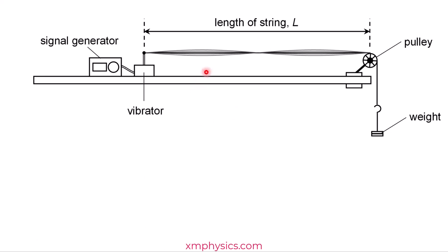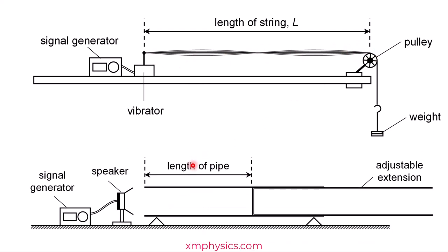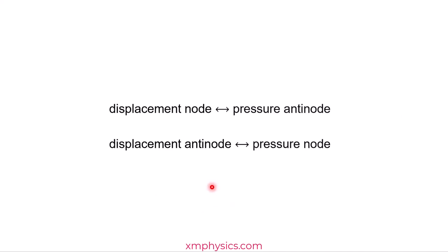In the earlier video you have seen that we can set up a standing transverse wave on a fixed string. Turns out we can do something similar using sound waves and a pipe. In future we'll be talking in more detail about both open pipes and closed pipes, but in this video all I want to do is explain why the displacement nodes and anti-nodes and the pressure nodes and anti-nodes are flipped.